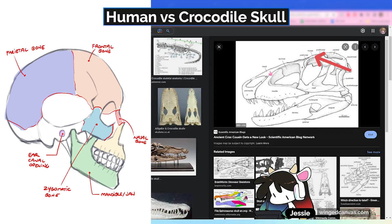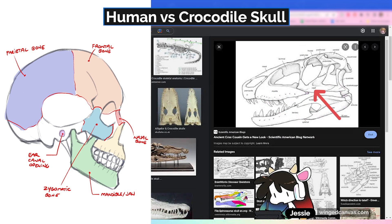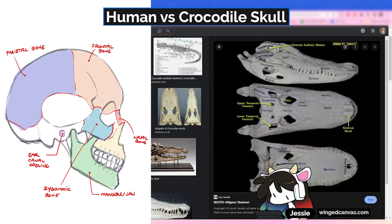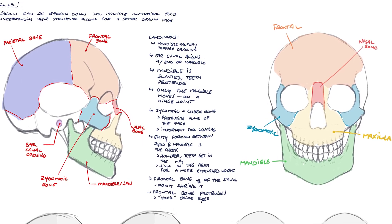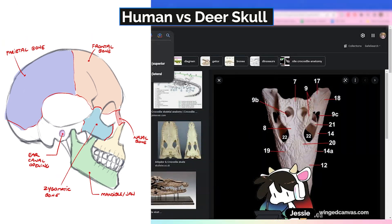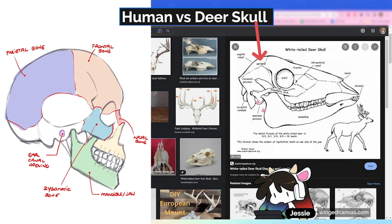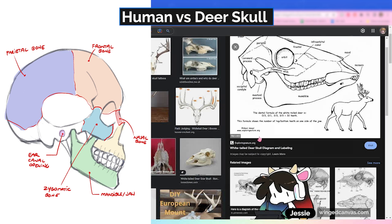A crocodile is the same thing: nasal, the frontal is all kind of here, parietals back here, maxilla is here. They have slightly different ones — there's the dentary, the angular, the jugal — but it's generally approximately the same, just a different shape. All mammals will have the same kind of structure. Check them out in our human skull anatomy video. A deer skull has the same thing: zygomatic arch, frontal, parietal, mandible, nasal — all the same, just a different shape.